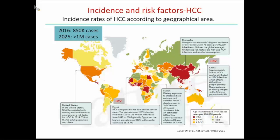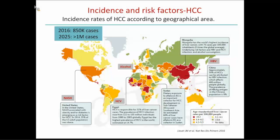Hepatitis C is the number one cause of HCC in the US and the second cause globally, accounting for 38% of cases. I chose Egypt here because the prevalence of HCV in Egypt is 14% of the population. Alcohol is the third cause of HCC, very prevalent particularly in rural areas of France and northern Spain. In the US, the fastest growing cause of HCC is NASH and alcoholic steatohepatitis related to metabolic syndrome, obesity, and diabetes — 35% of the US population is obese, and some will develop NASH and HCC.